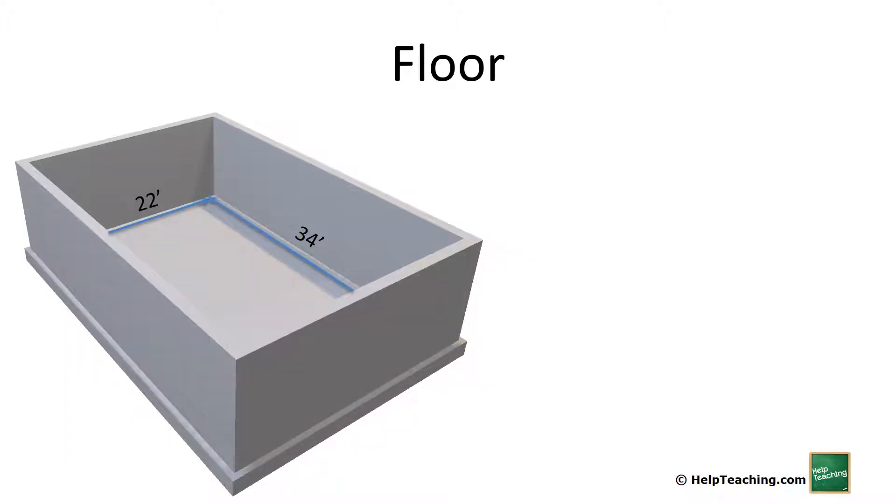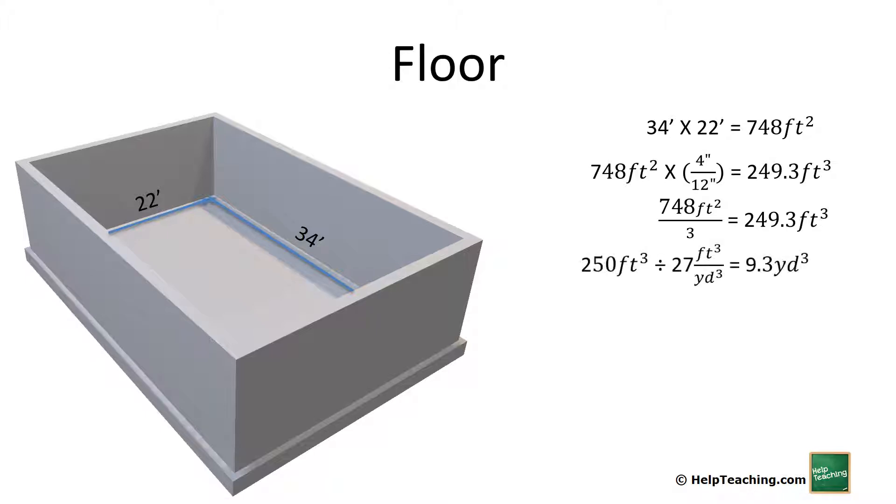Next, we'll pour a slab floor in the middle. This will match the inside dimensions of the walls, so 22 times 34 gives us 748 square feet. We'll have a depth of 4 inches, so we multiply by 4 divided by 12. 748 times 4 divided by 12 gives us 249.3 cubic feet, or we could do 748 divided by 3 (since 4 inches is one-third of a foot). Dividing by 27 to convert to yards gives us 9.3 yards. Adding our safety margin of 5% gives us 9.75 yards.